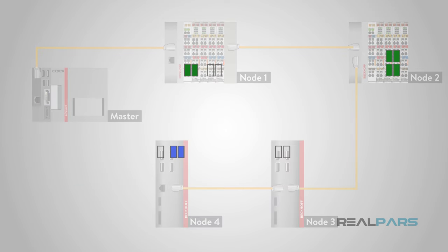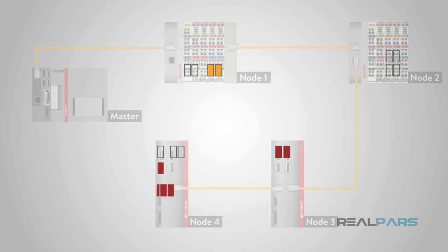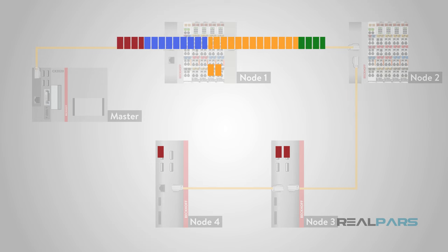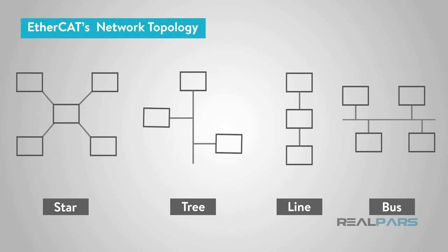Yet another advantage comes in the form of network topology. Many different network topologies may be used within an EtherCAT network. Because it utilizes Ethernet's full duplex layers, the EtherCAT slave will automatically return the frame to the master with an open port detected downstream, essentially self-terminating. Ethernet star topology is simple and can be used, but EtherCAT networks can extend well beyond that with a tree, line, etc. It can also be used in a fieldbus-type system using Ethernet hardware, giving incredible flexibility for your EtherCAT network.